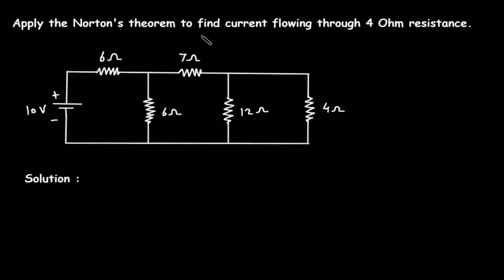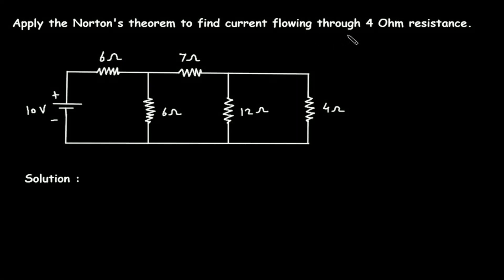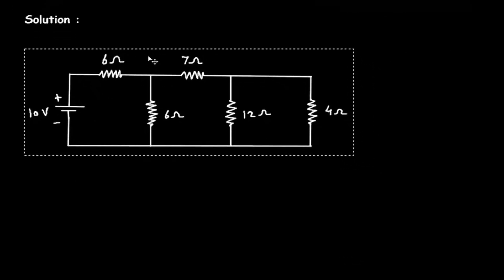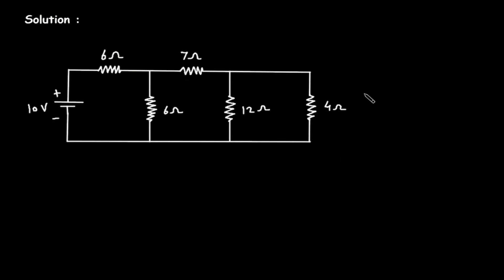Apply Norton's theorem to find current flowing through 4 ohm resistance. We have to find current flowing through this 4 ohm resistance using Norton's theorem. Let's say this is terminal A and this is terminal B. So this will be our RL, and RL is equal to 4 ohm.